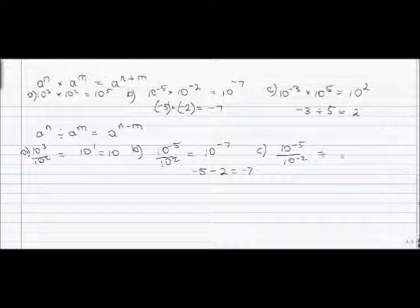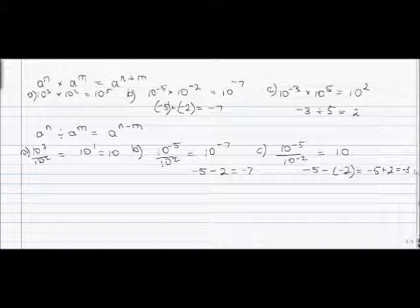Problem C: 10 to the negative 5 over 10 to the negative 2. We keep the same base, and for the exponents we get negative 5 minus negative 2. Keep in mind that minus and minus gives us plus, so it becomes negative 5 plus 2. Since the signs are different, we subtract: 5 minus 2 gives 3, and we keep the sign of the larger number, which is negative 5. So the answer is 10 to the negative 3.